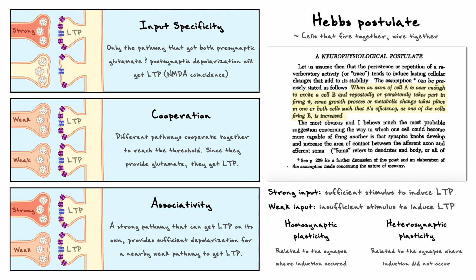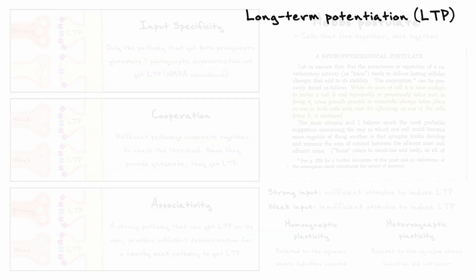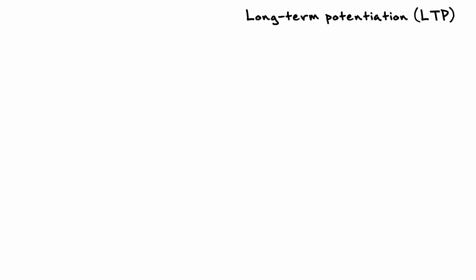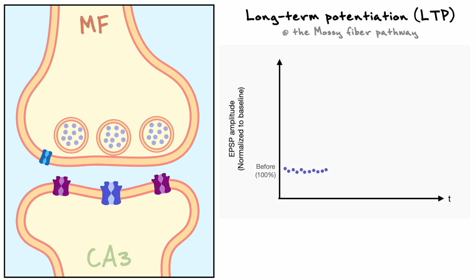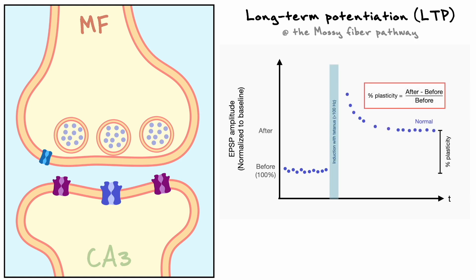LTP can occur through different mechanisms. Let's consider the mossy fiber pathway between the granule neurons and CA3 neurons. Electrophysiological recordings show that applying a tetanus to this synapse will also induce LTP. However, if we perform the recording with AP5 blocking the NMDA receptors, the LTP still occurs. It turns out that LTP in the mossy fiber pathway is entirely presynaptic, and for that reason it does not require the activation of NMDA receptors.